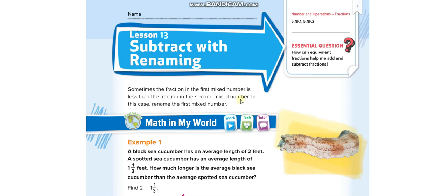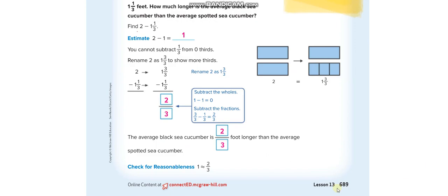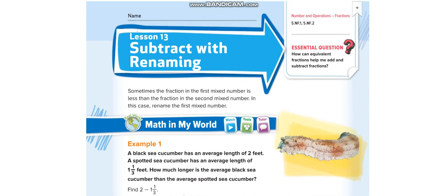Good morning everyone. Today's lesson for grade 5 is Chapter 9, Lesson 13, Subtract with Renaming. Let me show you the page numbers: 689. I hope you guys are having your books and pencils in your hands. If not, please stop this video first and take out your books and pencils.